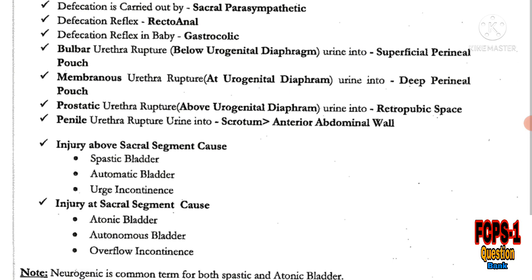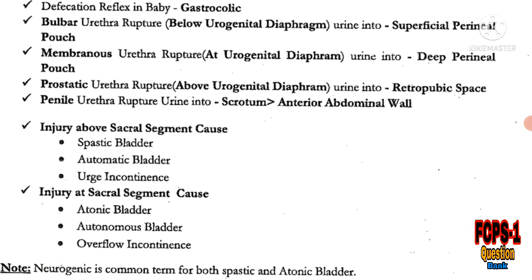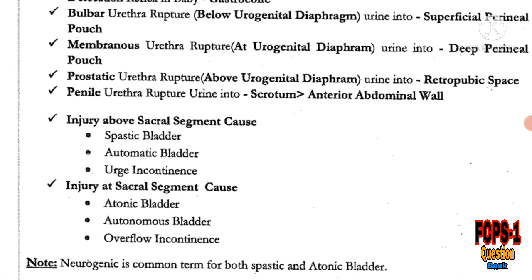Injury above the sacral segment of the spinal cord causes spastic bladder, automatic bladder, and urge incontinence. Injury at the sacral segment causes atonic, autonomic, and overflow incontinence. Remember: above the sacral segment — spastic, automatic, urge incontinence; at the sacral segment — atonic, autonomic, overflow incontinence.